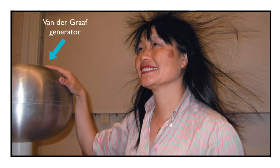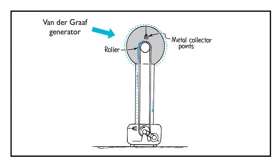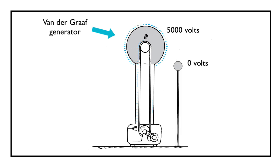Here's a Van de Graaff generator, with its dome charged to an electric potential of 5,000 volts. Here's a grounded metal sphere at 0 volts. Because of the electric potential difference, charge can flow from one to the other.